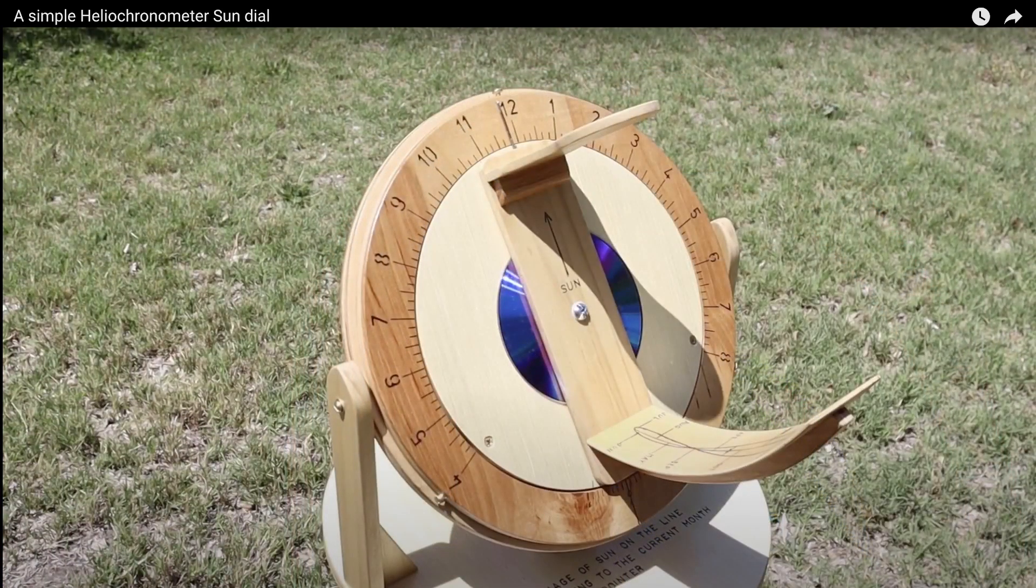Now the interesting thing about this heliocronometer is that it is literally accurate to about 1 minute. Yet this arm is probably 8 or 10 inches long. So despite a rather short radius for the sun he's getting 1 minute of accuracy out of this. Maybe 2. I think that I can do a little bit better.